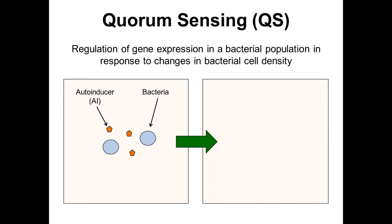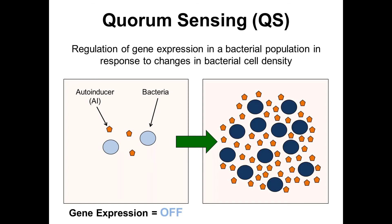This brings me to quorum sensing — the regulation of gene expression in a bacterial population in response to changes in bacterial cell density. Bacteria manage this through the production and secretion of signaling molecules called autoinducers. At low numbers of bacteria, when a population is young, there are only a few bacterial cells and they've only secreted a few autoinducers, so gene expression is off. However, as the bacterial population grows, more and more autoinducers are secreted. At some point these autoinducers cross a concentration threshold, at which point they bind to bacterial cells, initiate a signaling cascade, and turn gene expression on.